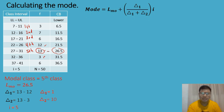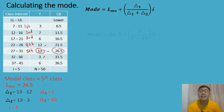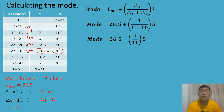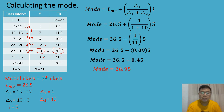Using the formula, mode is equal to the lower boundary of the modal class plus delta sub 1 all over delta sub 1 plus delta sub 2, times the class width. Substituting: 26.5 plus 1 all over 1 plus 10, times 5. So mode equals 26.5 plus 1 divided by 11, which is 0.09, times 5, added to 26.5. The answer is equal to 26.9.